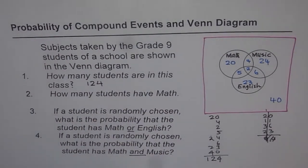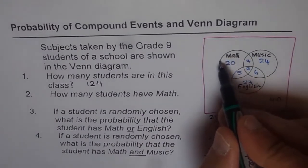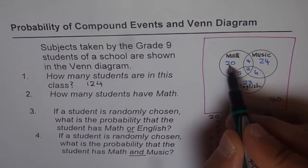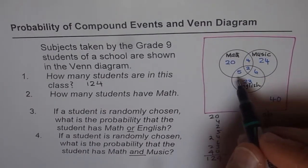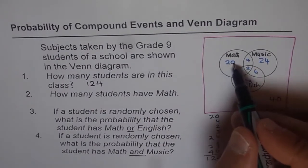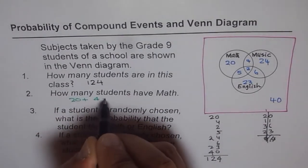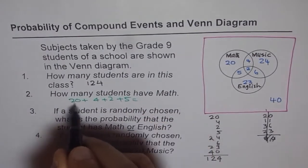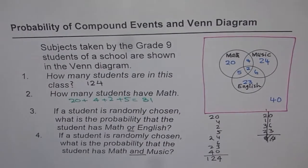Now, how many students have math? We look at the whole math circle. It includes 20 plus 4 plus 2 plus 5. So 5 plus 2 is 7, plus 4 is 11, plus 20 is 31. So 31 is the total number of students who have taken math.